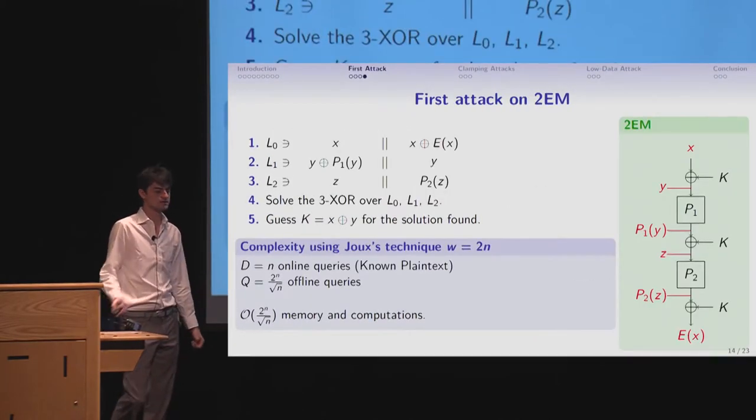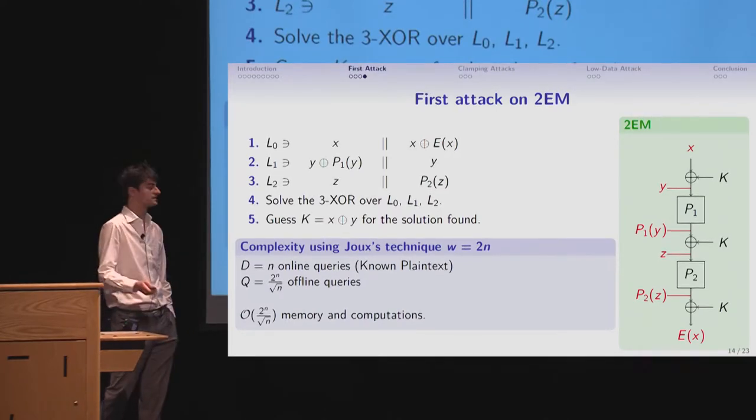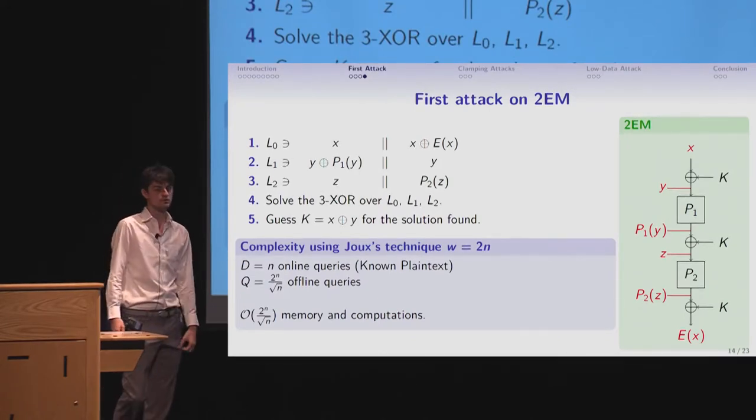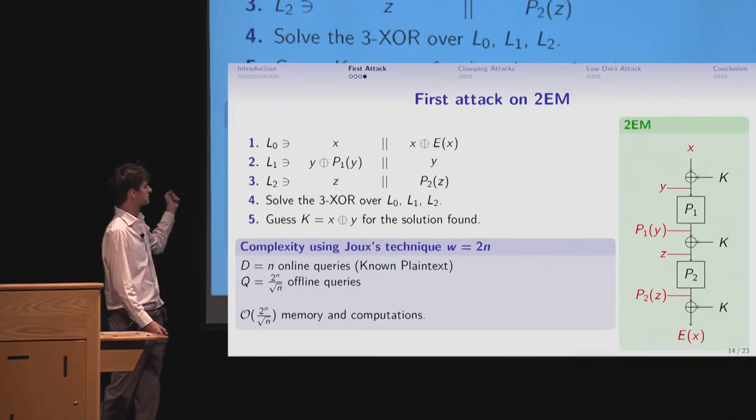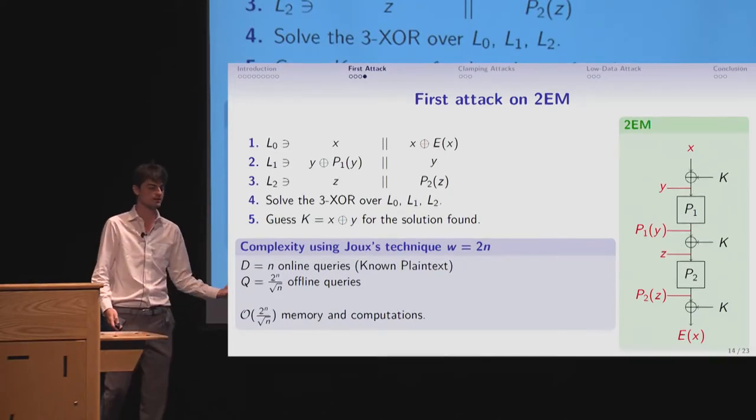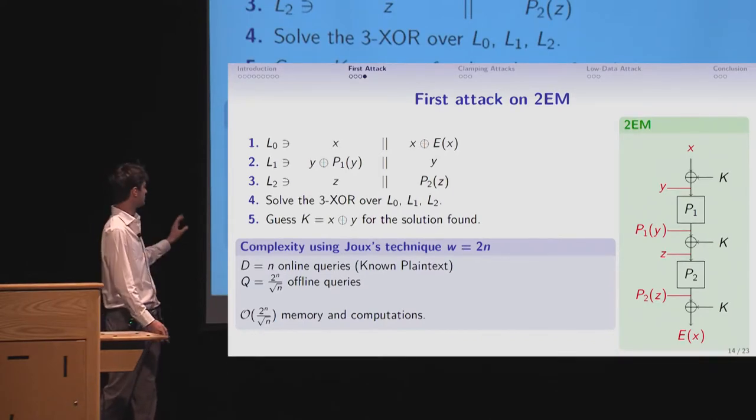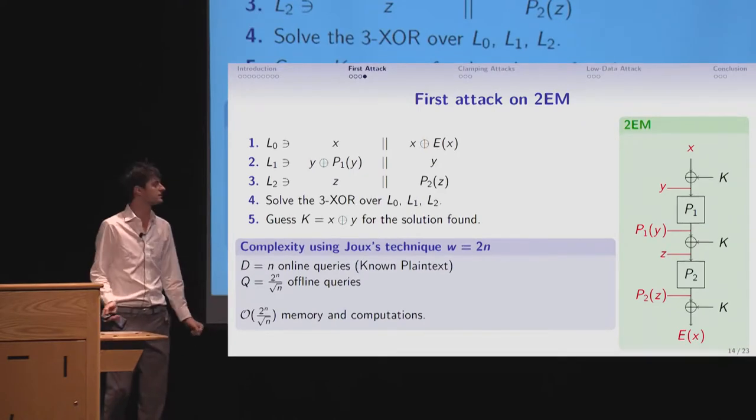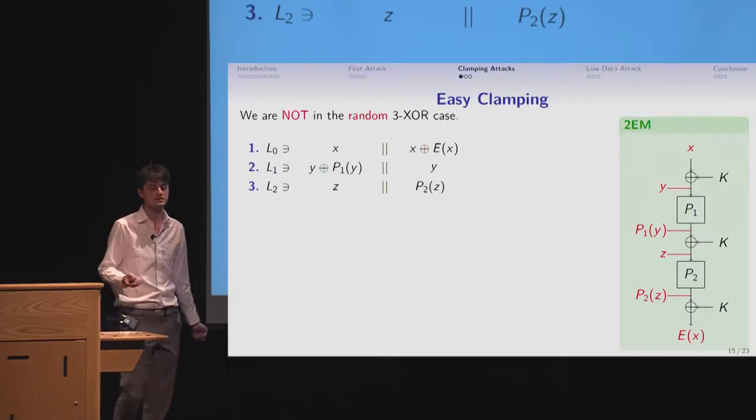And so how does this translate for cryptanalysis, just this. We use, we solve the 3-XOR with these techniques. And we have our first attack. We obviously chose the small list to be the first one, because then we have a very low, already very low, known-plaintext online complexity of data. So we use very few data, and it's enough. And we have a competitive cryptanalysis already. But we can do better, right? I just use the random 3-XOR algorithm on this, but we're not in the random case.